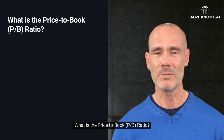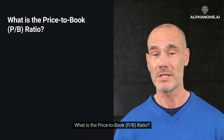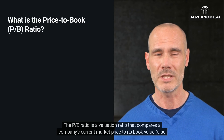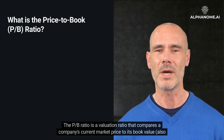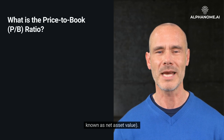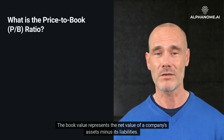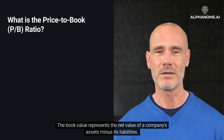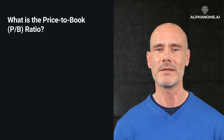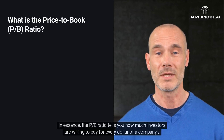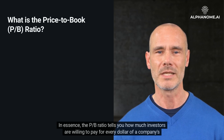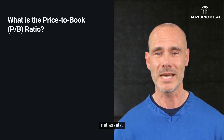The P/B Ratio is a valuation ratio that compares a company's current market price to its book value, also known as net asset value. The book value represents the net value of a company's assets minus its liabilities. In essence, the P/B Ratio tells you how much investors are willing to pay for every dollar of a company's net assets.